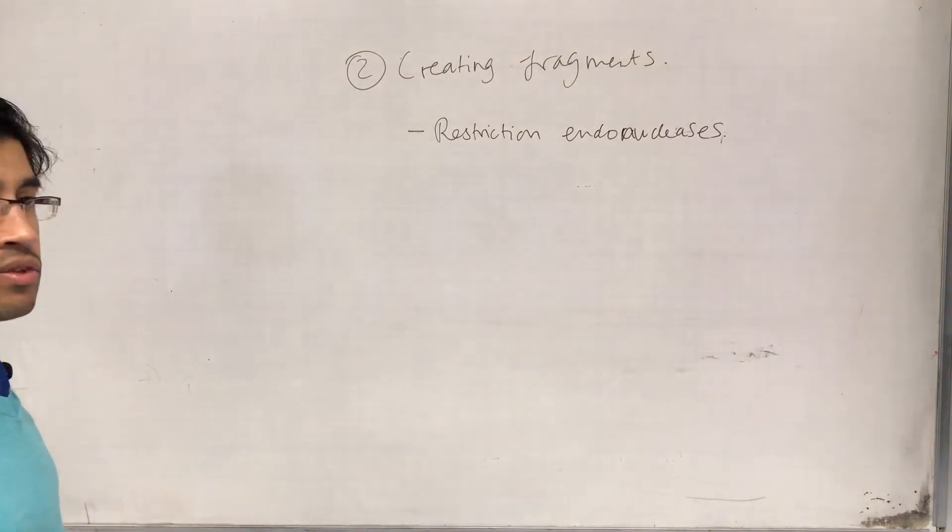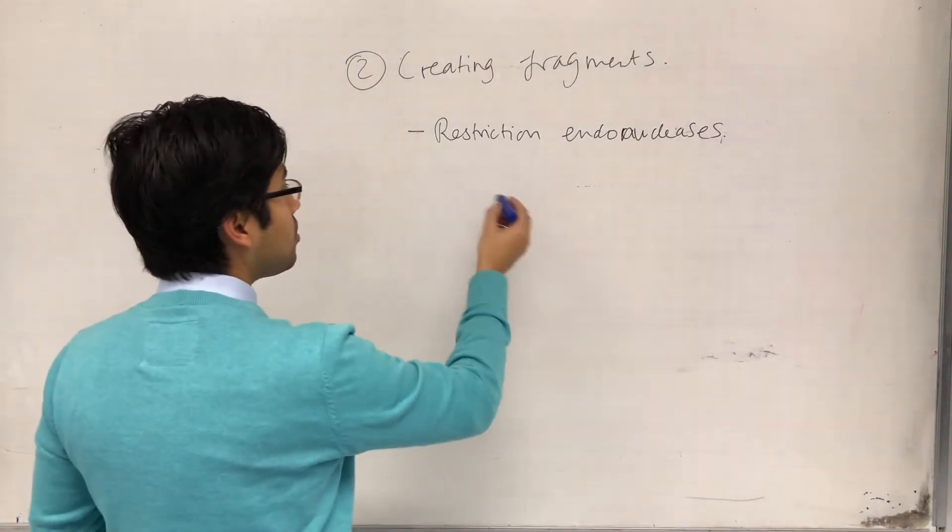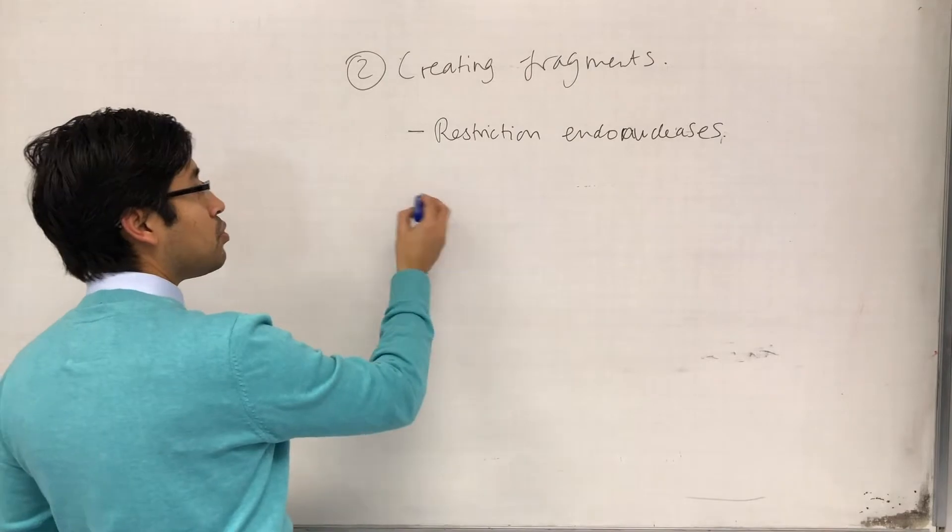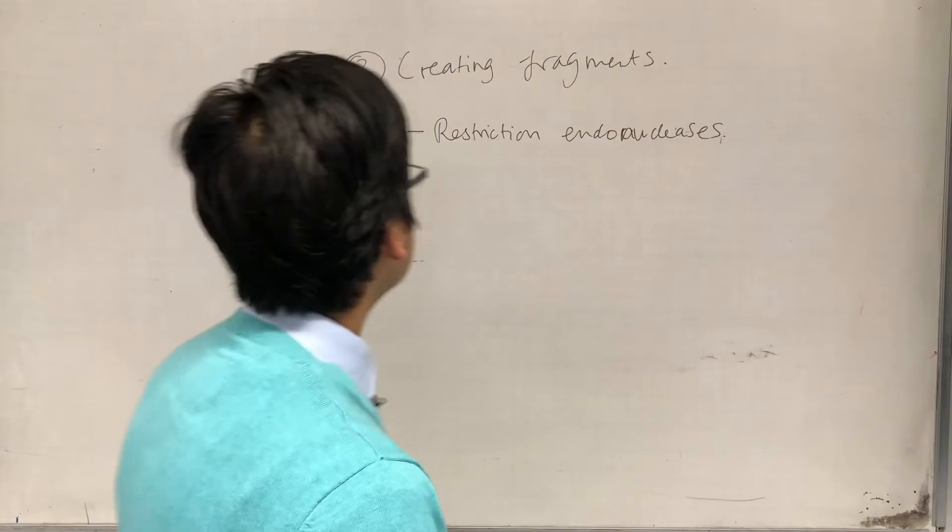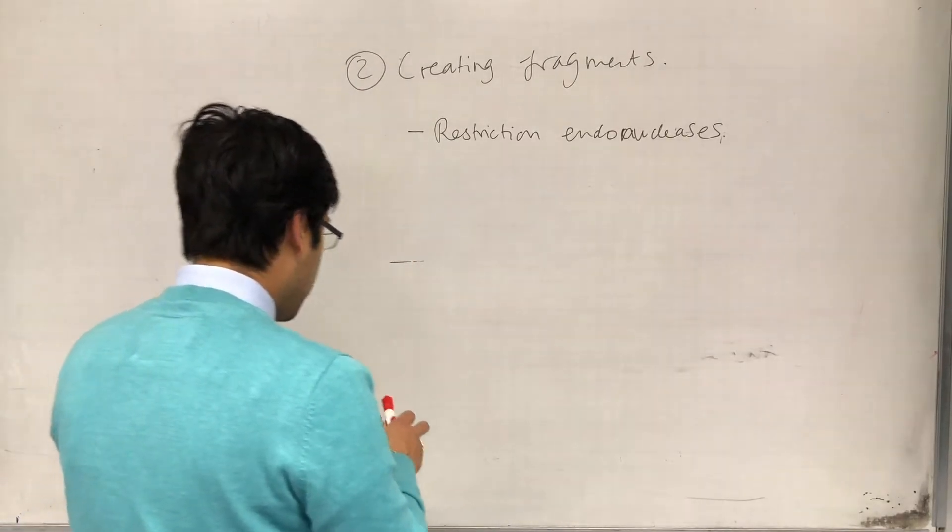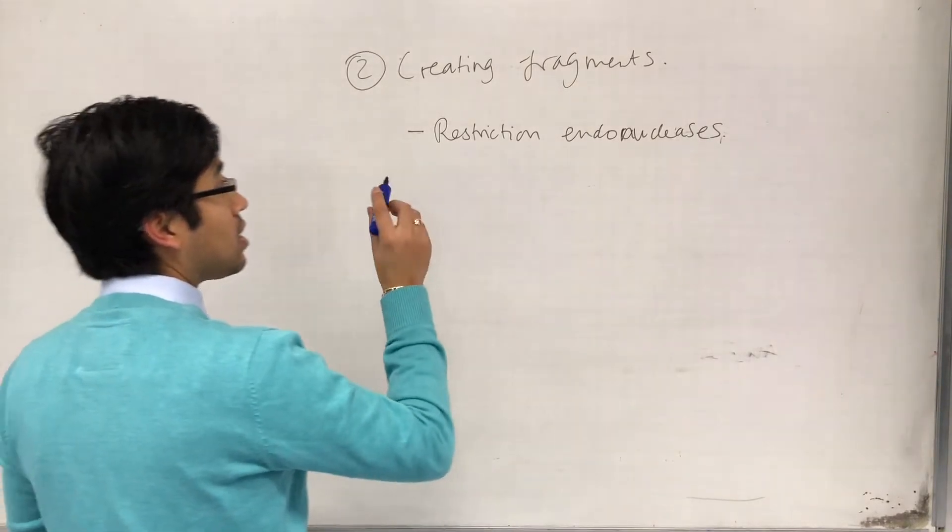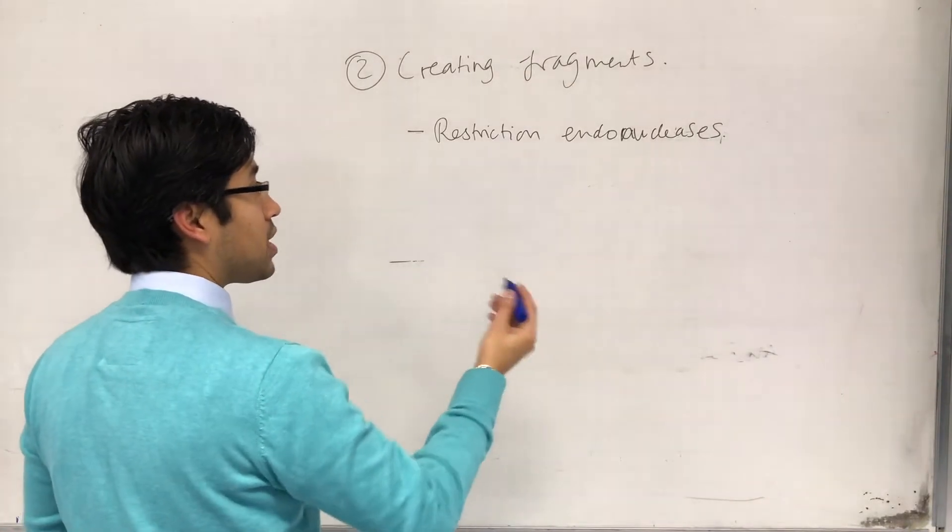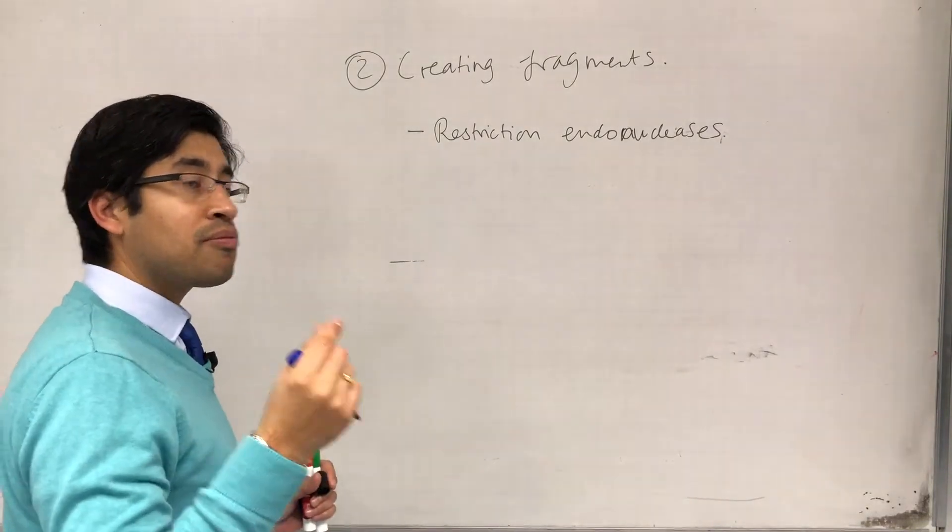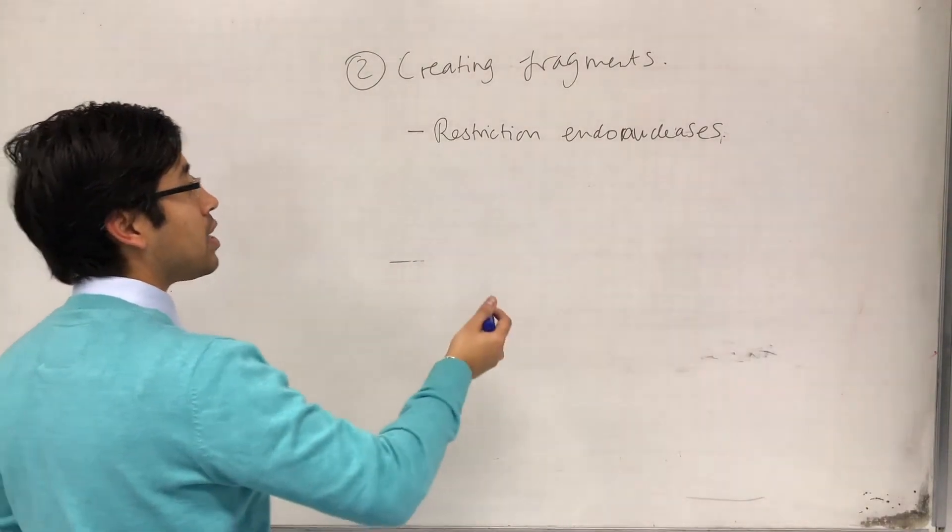There's lots of different types of these enzymes, and what they do is they bind to double-stranded DNA. Restriction endonucleases, they bind the double-stranded DNA, and they cut at the site that they bind. The sequence of bases that they bind is kind of like their substrate.